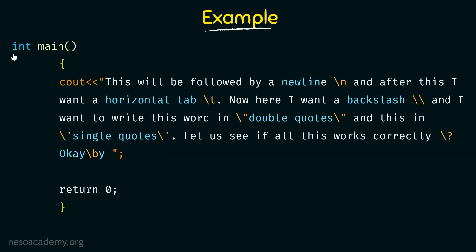Coming to the example, here is a small program. We have the main function with a cout statement. First, the string says 'this will be followed by a new line' and I give backslash n over here. That means after the word 'new line', the rest of the things will be printed on the next line and not continue on the same line. Then it says 'and after this, I want a horizontal tab', and I put backslash t. So after the word 'tab', there will be a horizontal tab given.